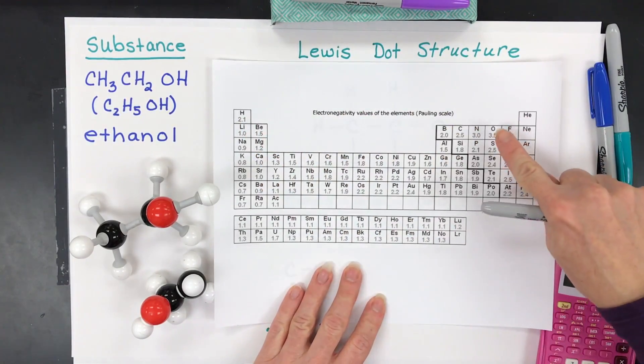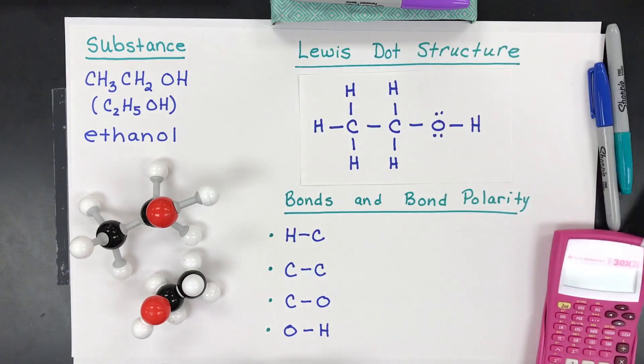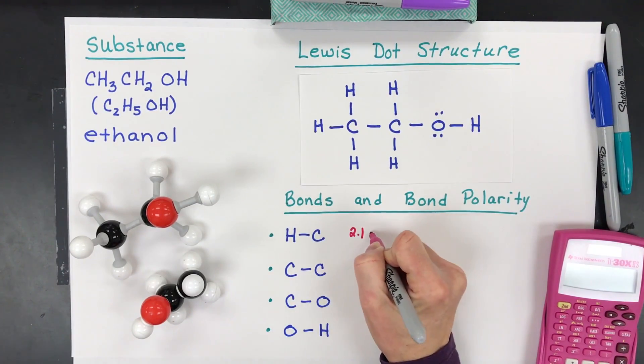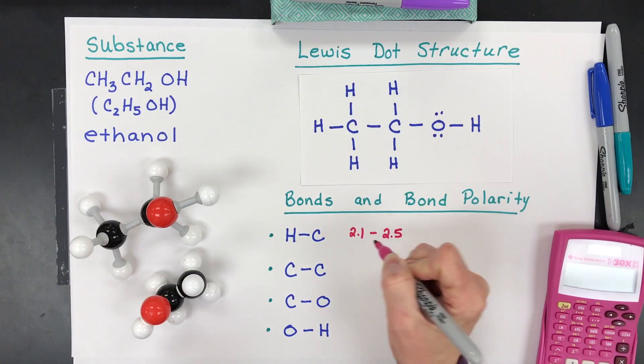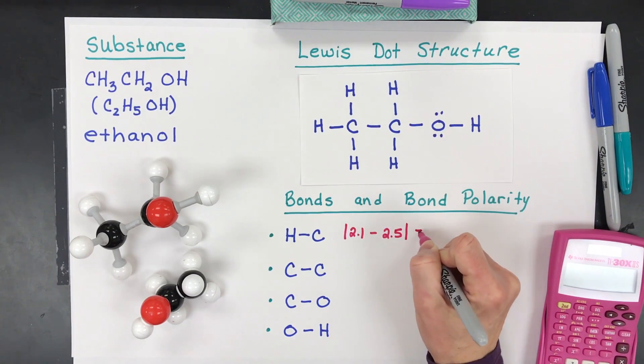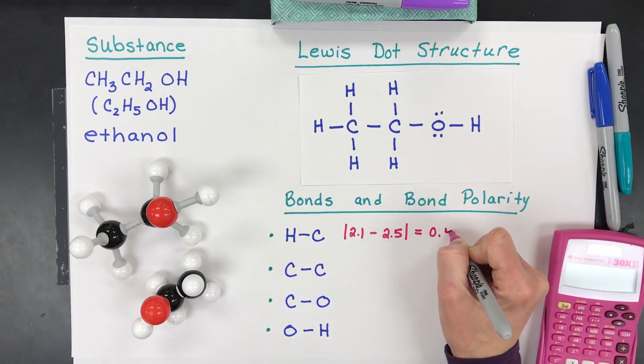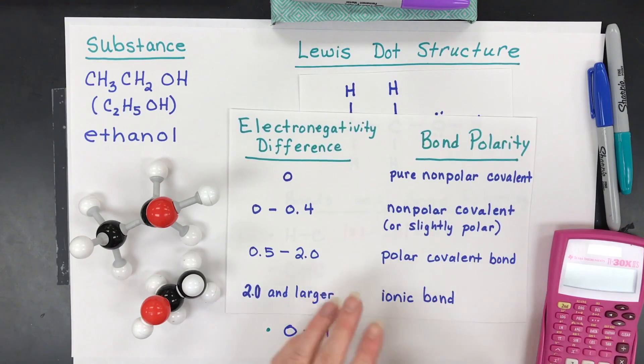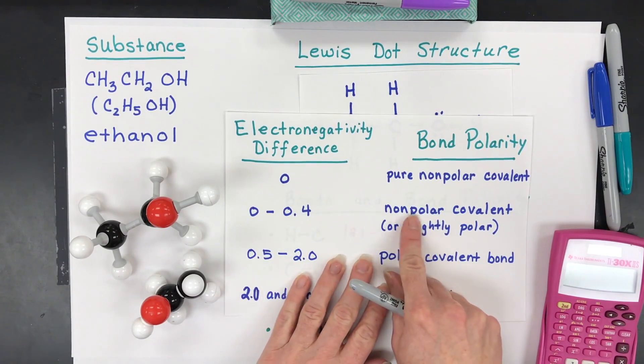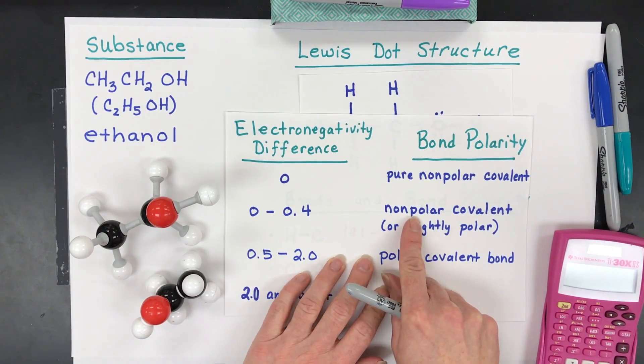Hydrogen is 2.1. Carbon is 2.5. So very simply, you write down 2.1. You subtract that from 2.5. Super easy. Take an absolute value because you can't have negative numbers with electronegativity differences, and you get 0.4. Voila. So then you grab your cutoffs. Remember, check with your teacher.